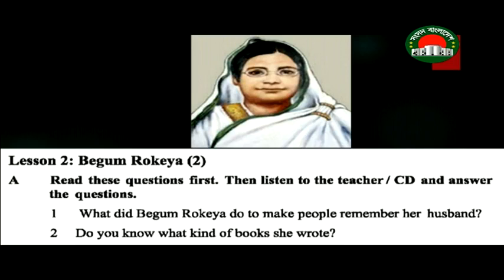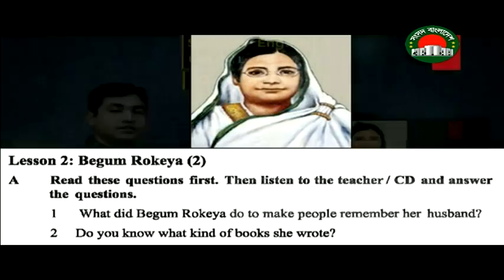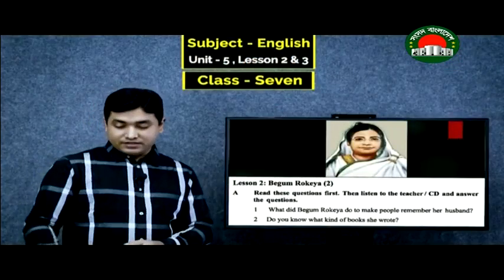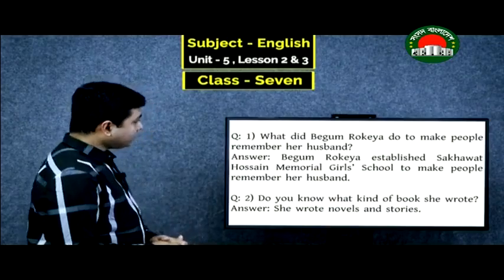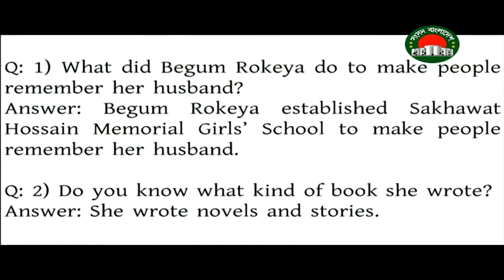The answer to Question 1 is: Begum Rokya established Shakwath Hussein Memorial Girls School to make people remember her husband. The answer to Question 2 is: she wrote novels and stories. I hope the answers are clear to you.